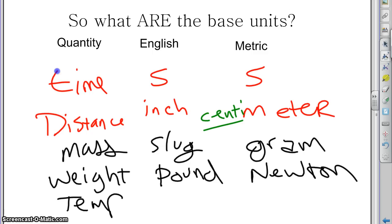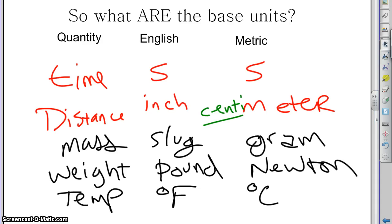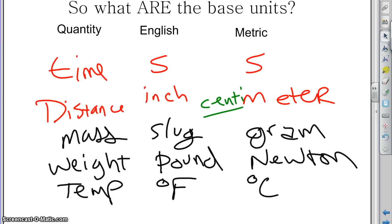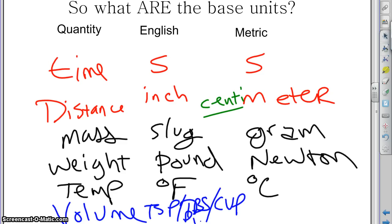Temperature: in the English system we use degrees Fahrenheit, and in metric they use degrees Celsius. This is the one place I will not yell at the English system — it turns out that Fahrenheit is really not any worse than Celsius; they kind of just do different things. The last one we'll talk about is volume — how much space something takes up. In the English system there are 800 billion different ways to measure it: teaspoon, tablespoon, cup, pint, gallon, quart, hogshead. In the metric system, we have just the liter. You can see it's a lot easier because there's just one base unit in metric, whereas there are all these crazy different things in the English system.